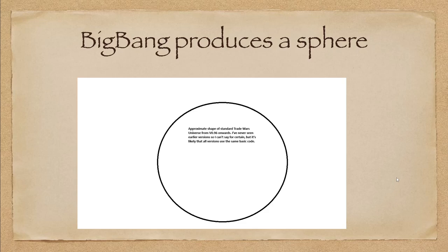This is the approximate shape of the standard Trade Wars universe from Trade Wars version 0.96 and onwards. I've never seen the earlier version, so I can't say for certain, but it's likely that all versions use the same basic source code for universe creation. Big Bang basically produces something that's a sphere.